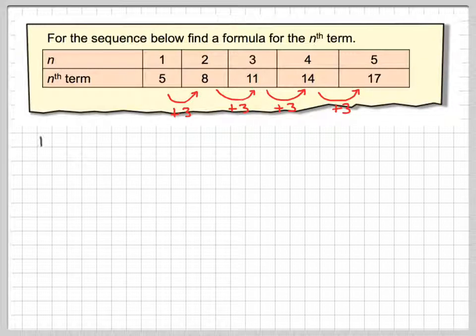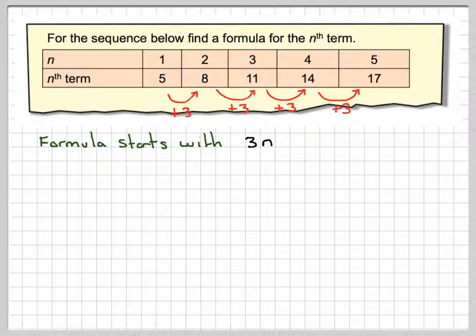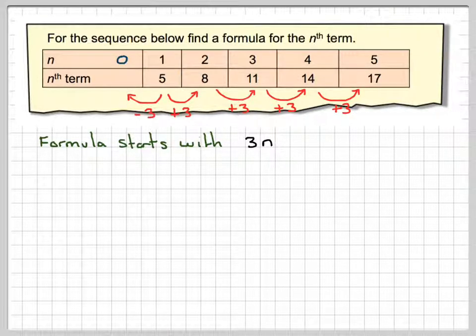If that is so, the formula will start with 3n. However, something has actually been added in each time. For example, if I did 3 times 1, I don't get 5. So, one way to do it is to go back one term.